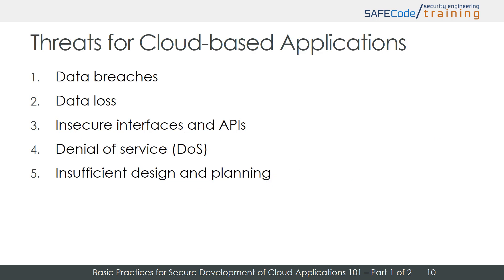The threat report created by the CSA reflects the current consensus among cloud and application security experts about the most significant threats to the security of cloud-based applications. The following five threats are what we deem most critical and specific to cloud-based applications: firstly, data breaches; secondly, data leakage and data loss; thirdly, insecure interfaces and APIs; fourthly, denial of service; and finally, insufficient design and planning. We will take a closer look at the nature of each of those threats.